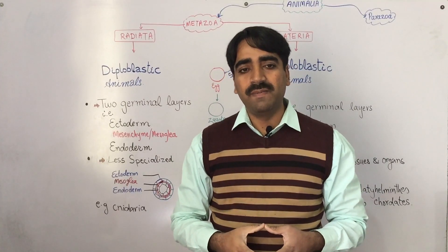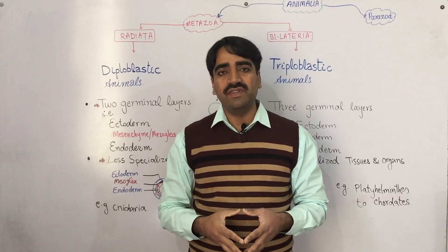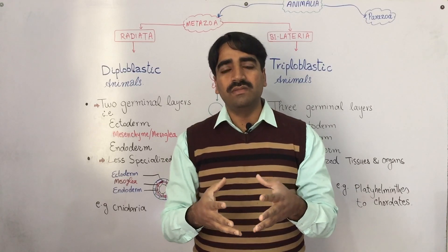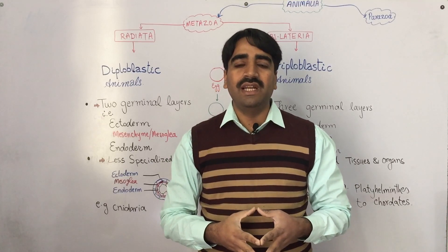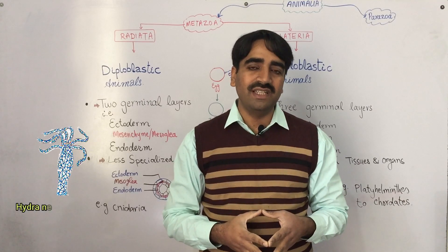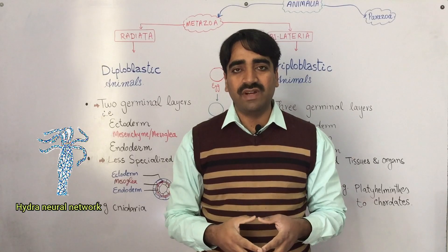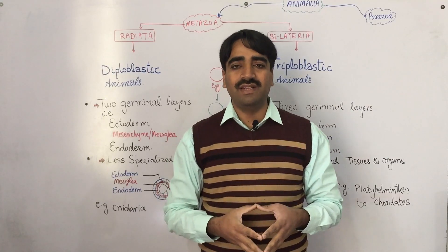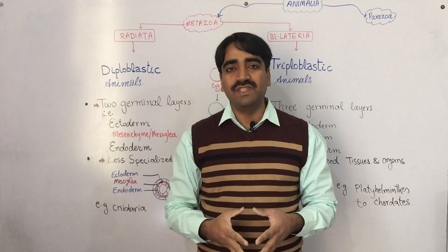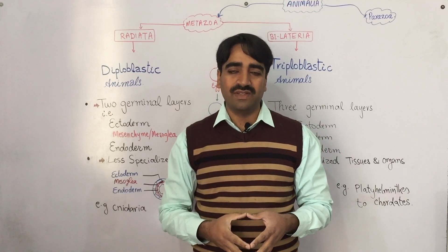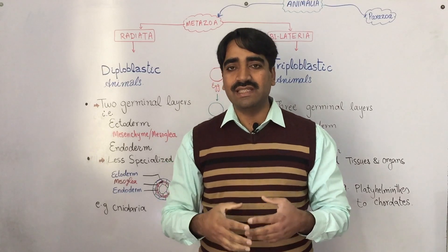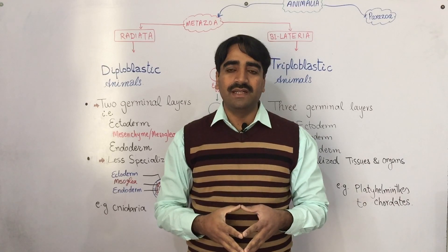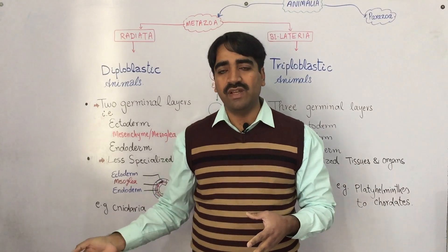There is no transport system or centralized nervous system present in diploblastic animals. Transport is carried out by diffusion. Instead of a CNS, they have a diffuse nervous system — as in the case of hydra, there is only a neural network with no brain and no directed impulse. There is no specialized digestive system; instead they have a gastrovascular cavity, which is a sac-like cavity with a single opening.